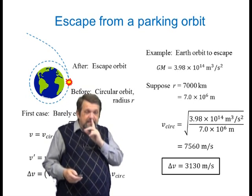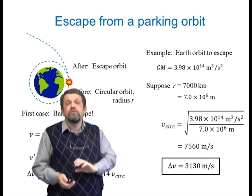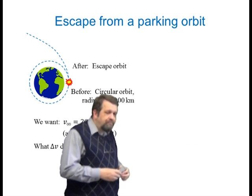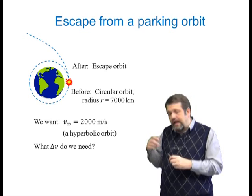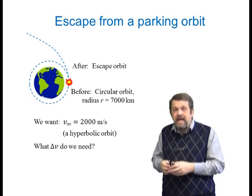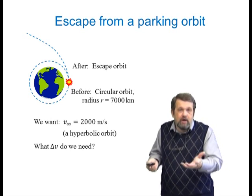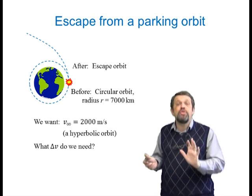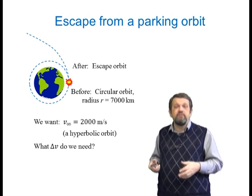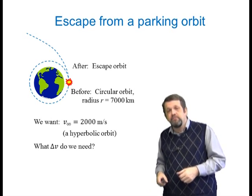Now let's try a more complicated example. We might not want to just barely escape — let's say we want a faster hyperbolic escape orbit with an asymptotic speed of 2,000 m/s. We start from the same circular parking orbit of radius 7,000 km. You might think we need to add 2,000 m/s on top of the parabolic escape delta-V. Let's see if that's true.